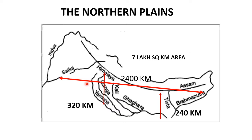It consists of mainly three river basins. The river Indus — the larger part of it lies in Pakistan, but its major tributary, river Satlaj, lies in the western part of India. Then the Ganga basin and the Brahmaputra basin.